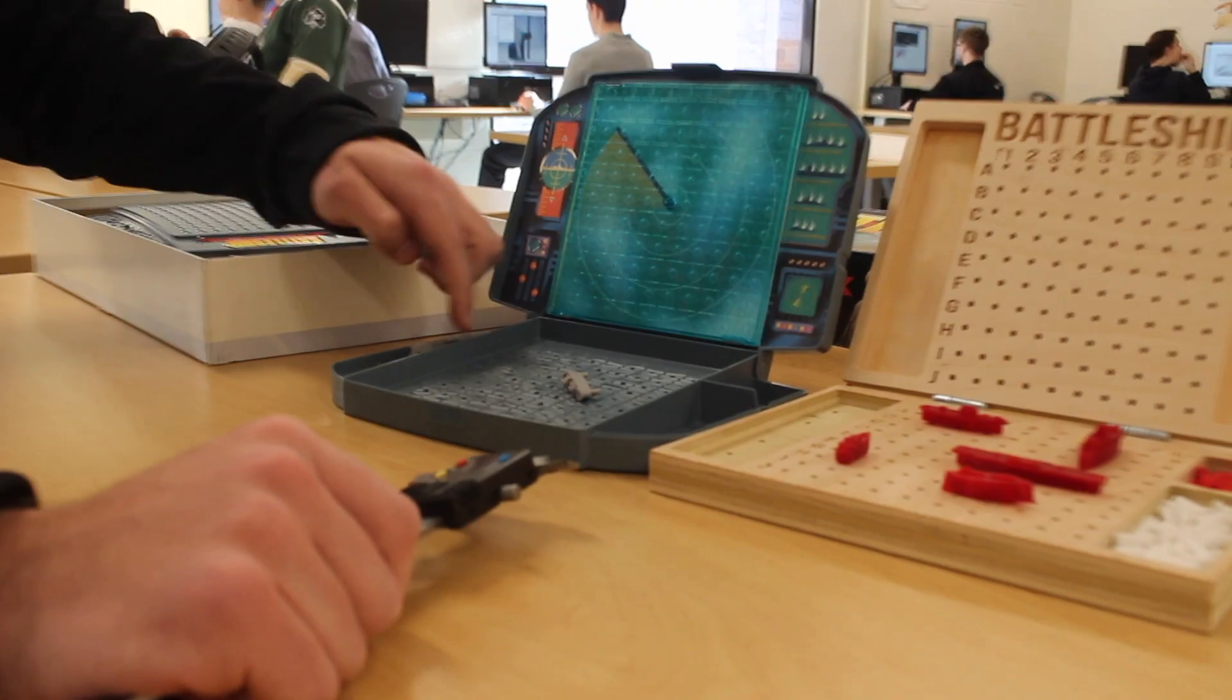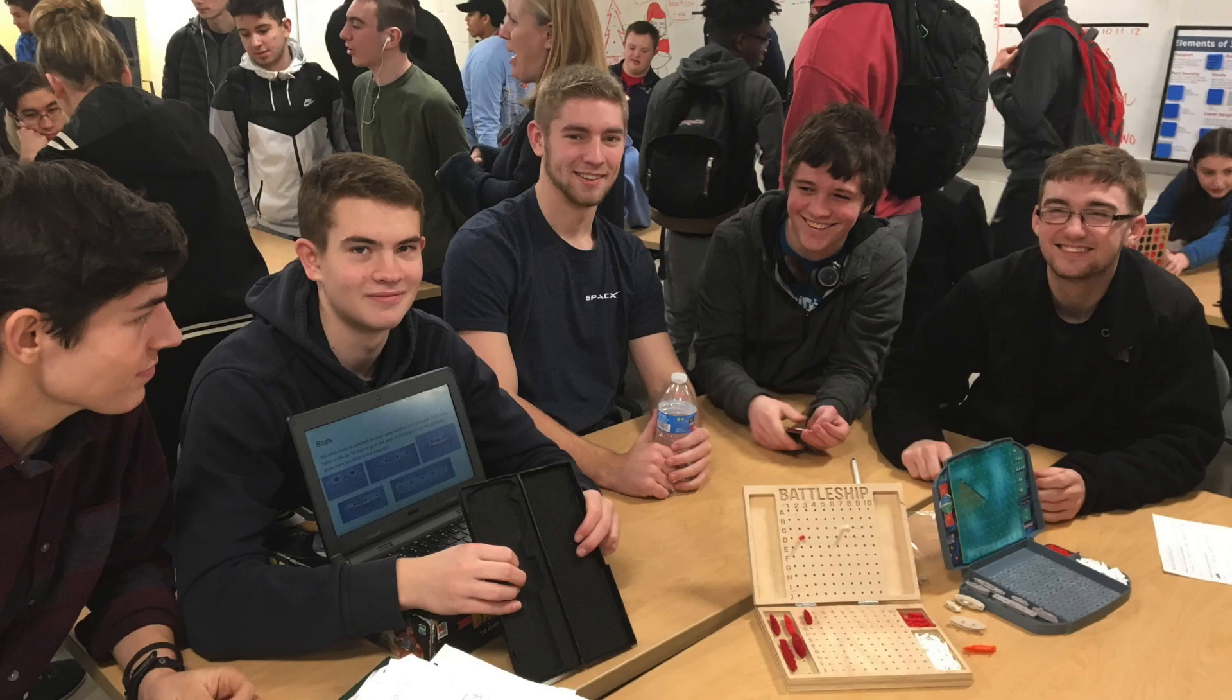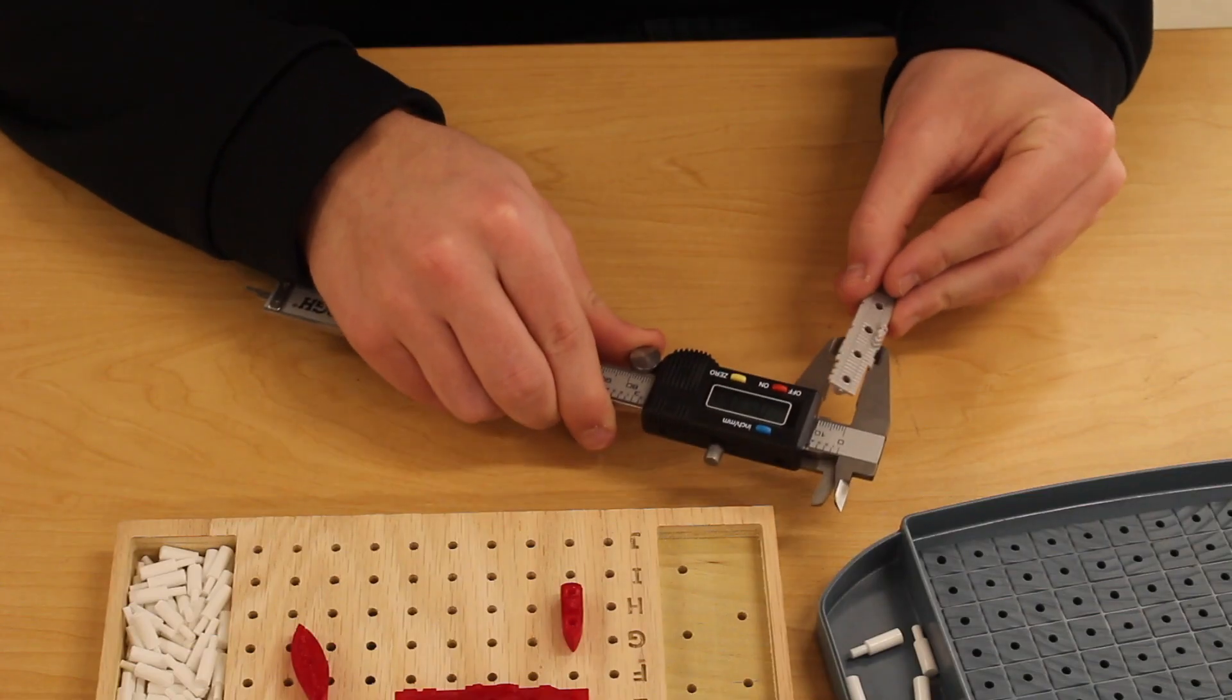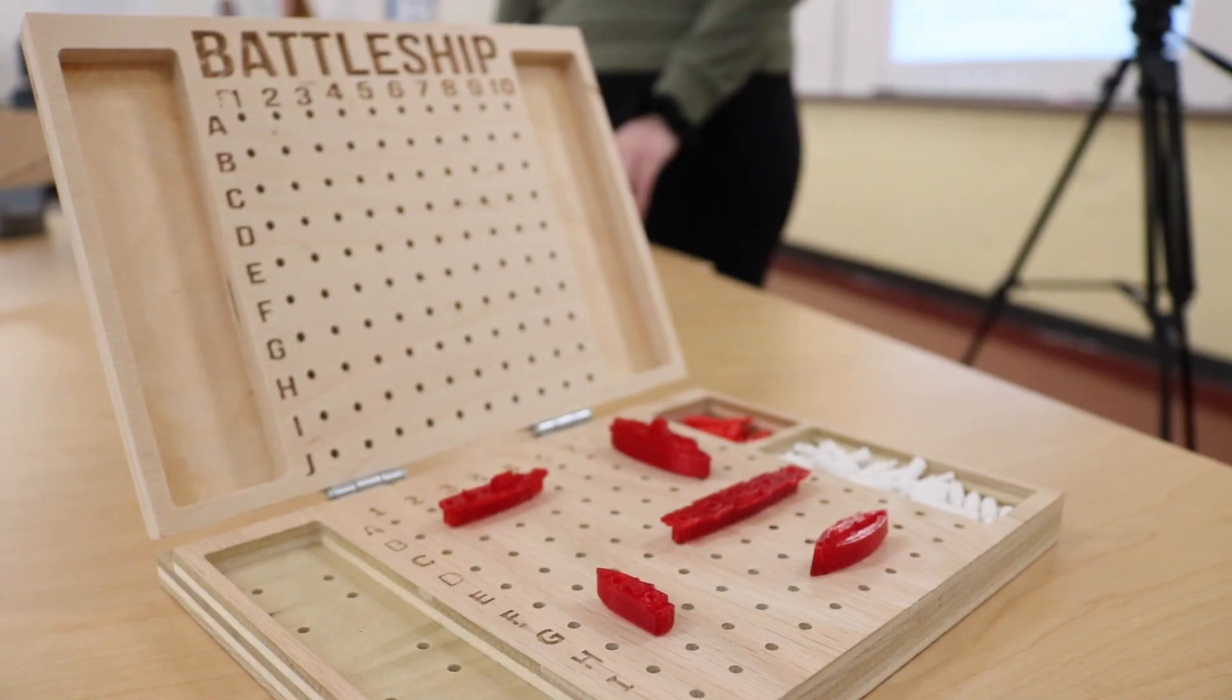My name is Benjamin McNeely. I'm a senior here at Melrose High School in the Engineering and Mechanical oriented CAD class. We started this five man battleship project where we carved one complete top and bottom board. We also 3D printed ships and pegs for it.